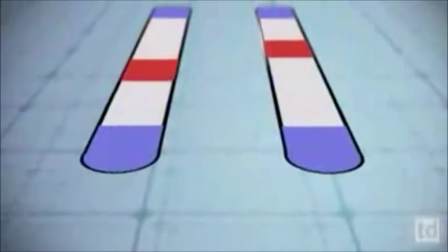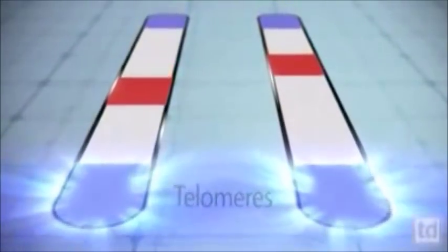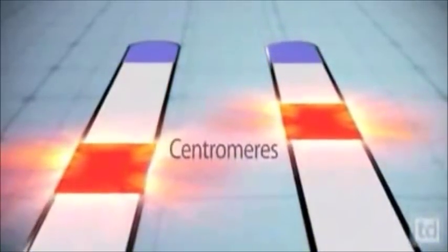Thus, scientists expected to find one human chromosome that was the result of a fusion and is homologous to two chromosomes that remain separate in the other great apes. This was identified to be our modern chromosome 2.